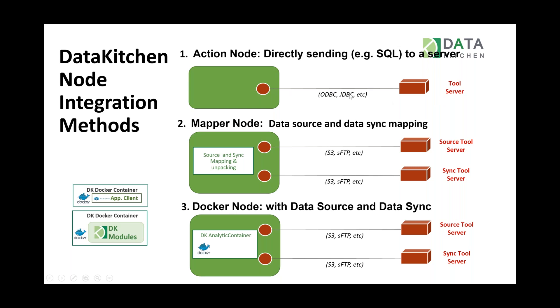The first type is an action node, which directly sends code — for instance SQL — to a server, and the data processing happens in that server. It connects through ADBC, ODBC, JDBC, and a bunch of different methods to run. If you're running against Redshift, BigQuery, or SQL Server, this is how we do it — we inject the code and run it against the server.